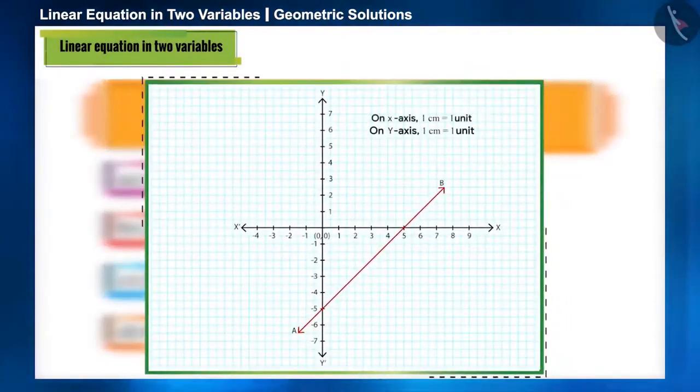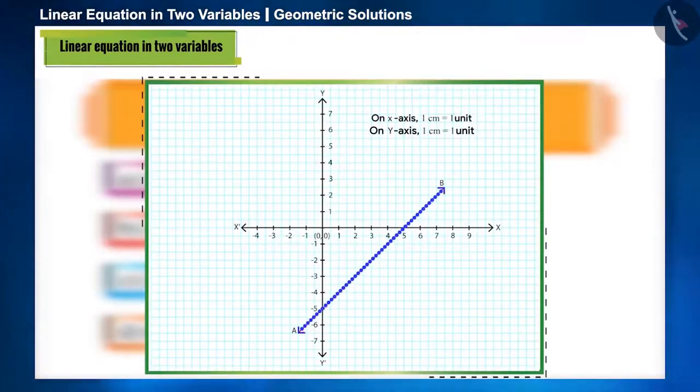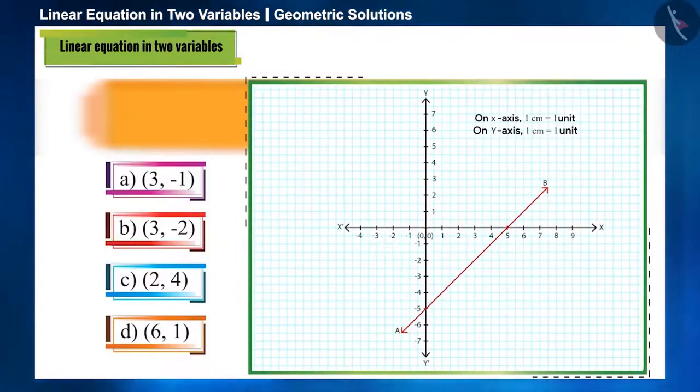As we already know that a line is formed by infinite points, and all those points are solutions of that equation. Here, we only have to see whether the given points are on this line or not. Let's see.